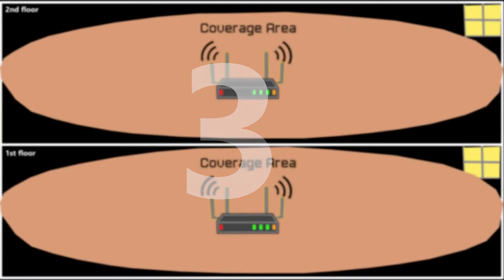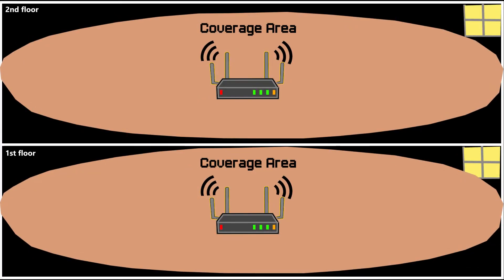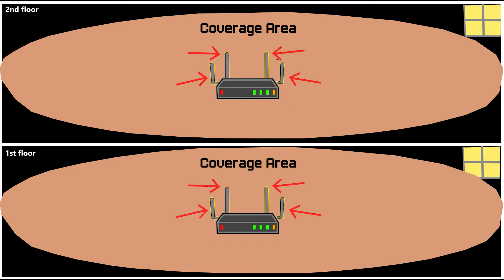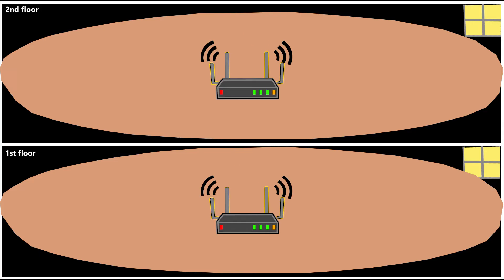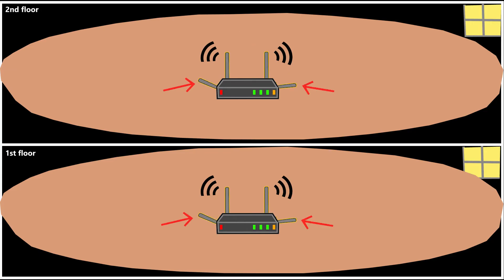The next scenario involves two access points without a dedicated band for the backhaul — for example, two Wi-Fi 6 dual-band access points each equipped with four dual-band antennas. In this case both bands are used for both client connections and the backhaul. To optimize the setup, I would position two of the antennas vertically for the clients and the other two horizontally for the backhaul connection.